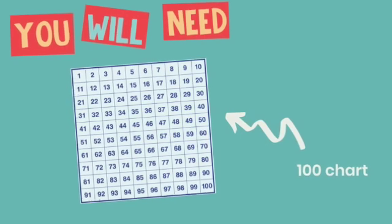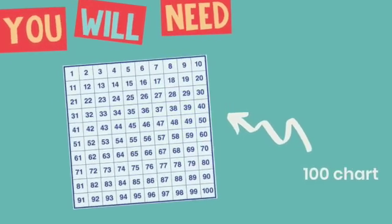This is called Euclid's Game. It's a two-player game, and all you need is a hundreds chart.